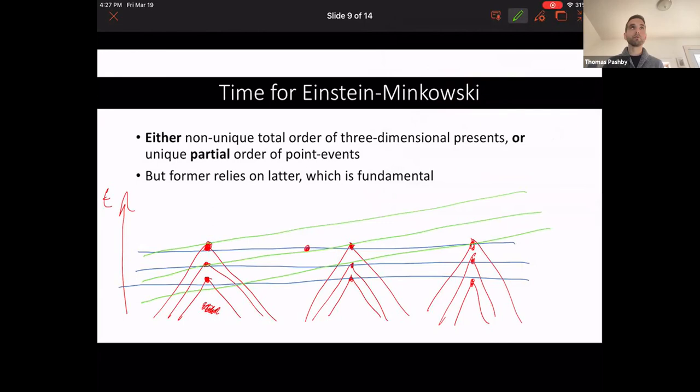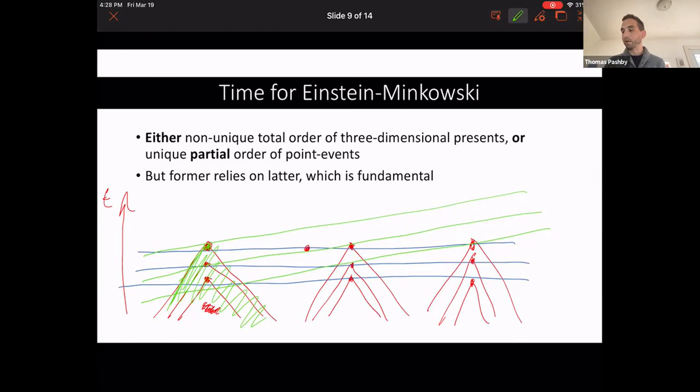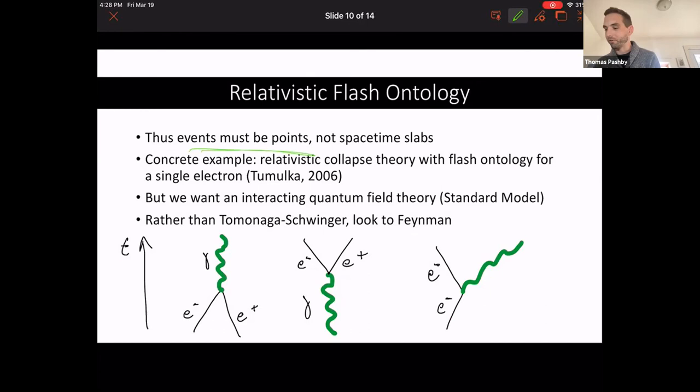And now in relativistic quantum filtering and Tomonaga Schwinger, we can say with Stapp that these non-unique three-dimensional presents unfolding in whatever way we choose contain the same physics. Why? Because what happens at a point depends only on its past, depends only on its past light cone. And so we're getting a non-unique representation of the local physics and the local physics is what gives us this unique partial order. So distant events, neither before nor after. Okay, and I don't want to abuse my position as chair to go on too far. So the upshot: events must be points rather than space-time slabs, which is a bit uncomfortable for a Whiteheadian.